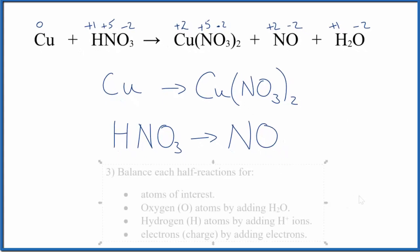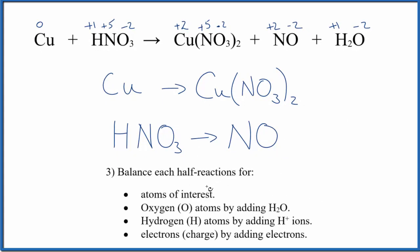After we have our half-reactions, we'll balance each one. First, we'll balance the atoms. Copper and copper are balanced. But we have two nitrates here, so we need to add some nitrates over here. We can add more nitric acid, HNO₃, because these are all the reactants in the beaker together. We need two of them to balance the two nitrates.